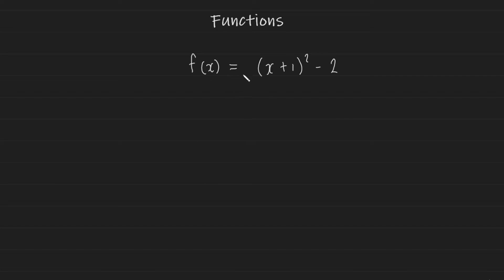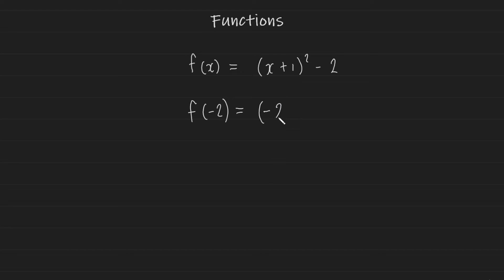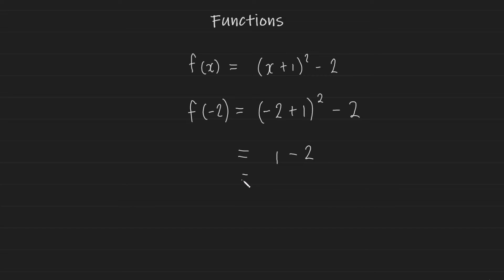Let's try another function. Here we have the function f which has an input of x and gives us an output of (x+1)² minus 2. Let's try an input of negative 2. It's a simple matter of replacing the x in your output expression with the input value, so it's going to be (−2+1)² − 2. BIDMAS applies: −2+1 is −1, (−1)² is positive 1, then subtract 2, giving a final answer of −1. So f(−2) = −1.